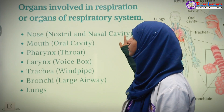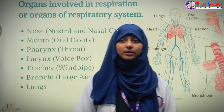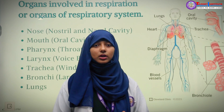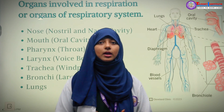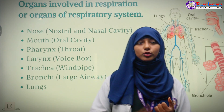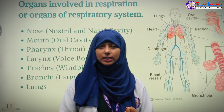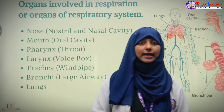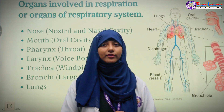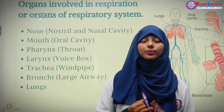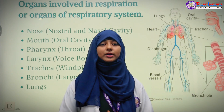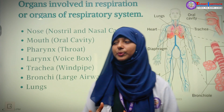The organs involved in the respiratory system are: nose, which includes the nasal cavity and nostrils; mouth, which is the oral cavity; then pharynx, larynx, trachea, bronchi, and lungs. Lungs are the major and most important part of the respiratory system.